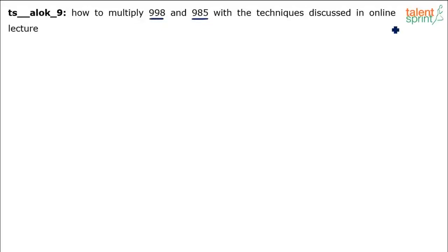How to multiply 998 and 985 with the techniques discussed in online lecture. Split and merge can also be used, whichever is comfortable for you. What do we have to do? 998 into 985. If you have to use split and merge, what do you do?